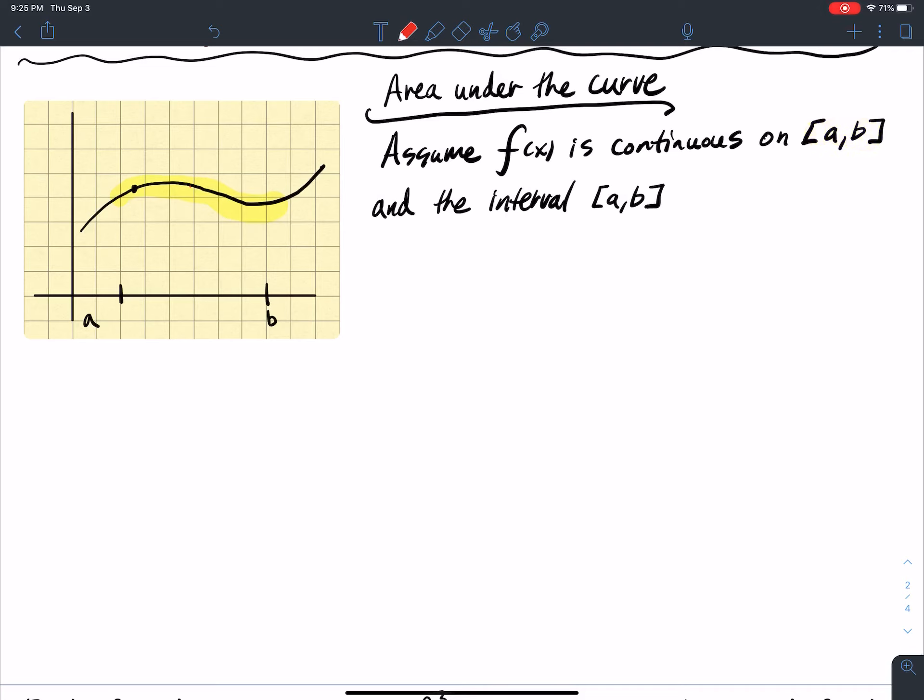So what we're going to do with this interval is we're going to partition it, which that's a fancy way of saying we're going to divide it up. We're going to cut it up. And the reason we're going to cut it up is because we're going to make individual rectangles that are going to be Riemann sums that add up the area under the curve.